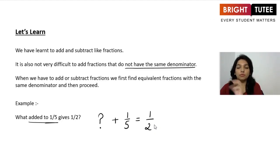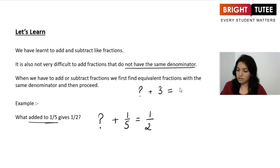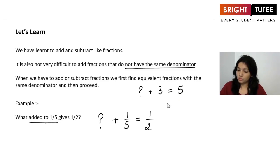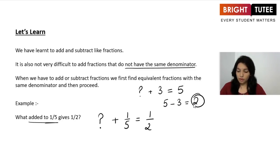For example, if a number added to 3 gives 5, how do you find that number? You do 5 take away 3, so the answer is 2. So similarly, we have 1 over 5 and 1 over 2.